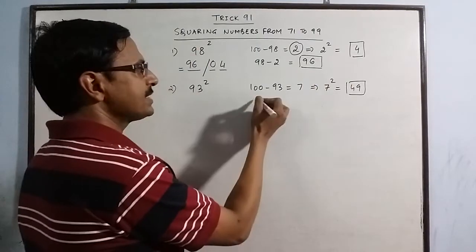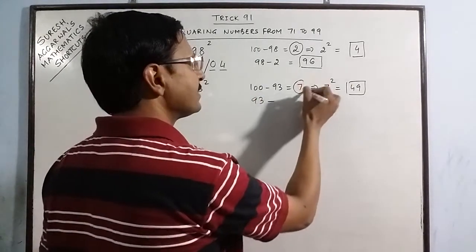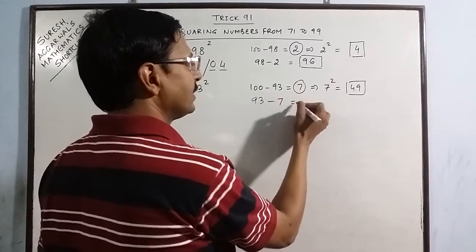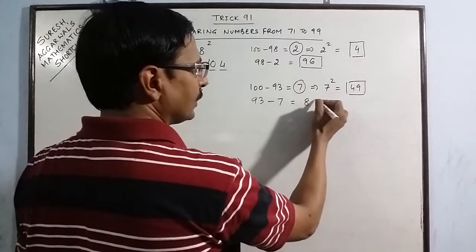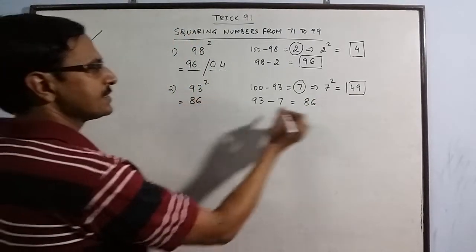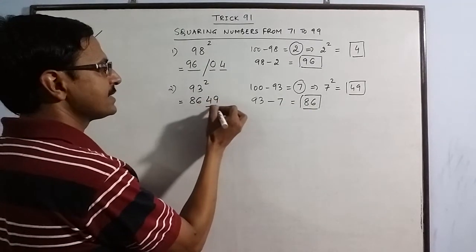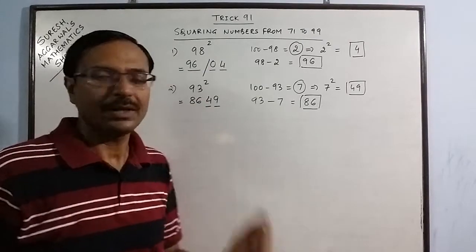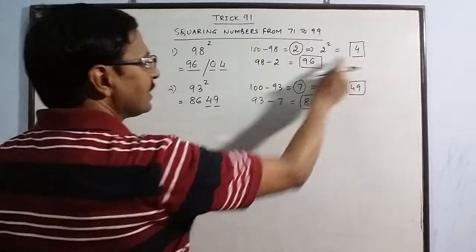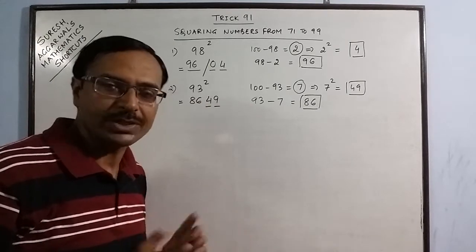Now your number is 93 and you have to subtract this 7 from this number 93. So you get 86. Now here your answer is 86 is the first part and 49 is the second part. Obviously this is 2 digit number. So you don't need to put any 0. Here we had a single digit, so we have put 0 in order to convert them into a 2 digit number.